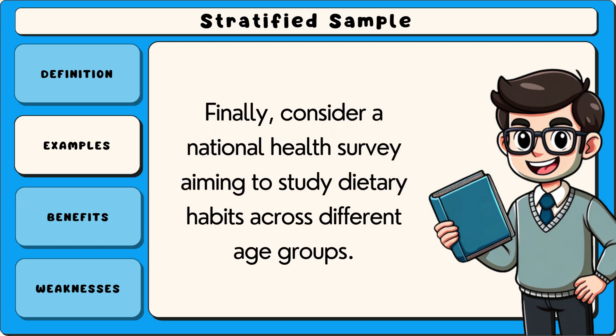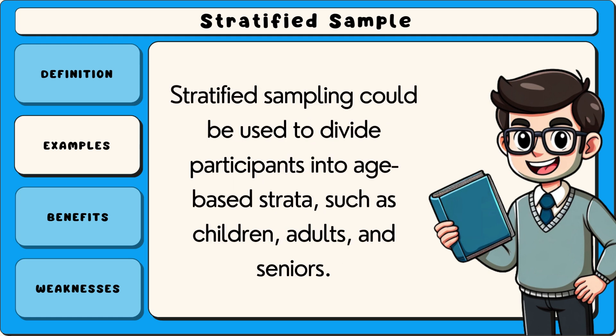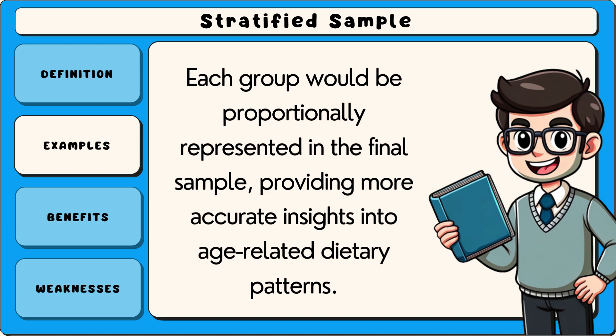Finally, consider a national health survey aiming to study dietary habits across different age groups. Stratified sampling could be used to divide participants into age-based strata, such as children, adults and seniors. Each group would be proportionally represented in the final sample, providing more accurate insights into age-related dietary patterns.